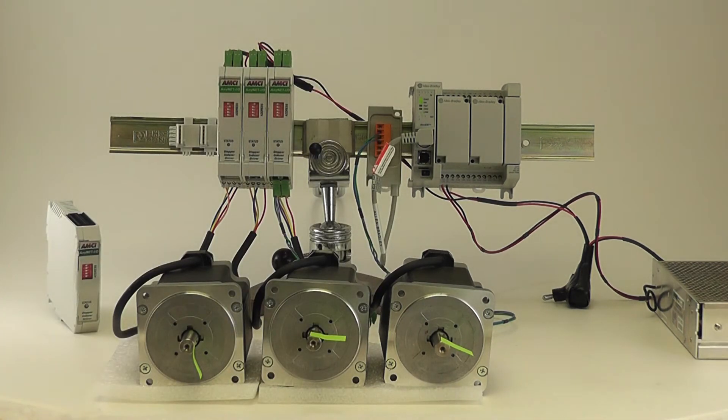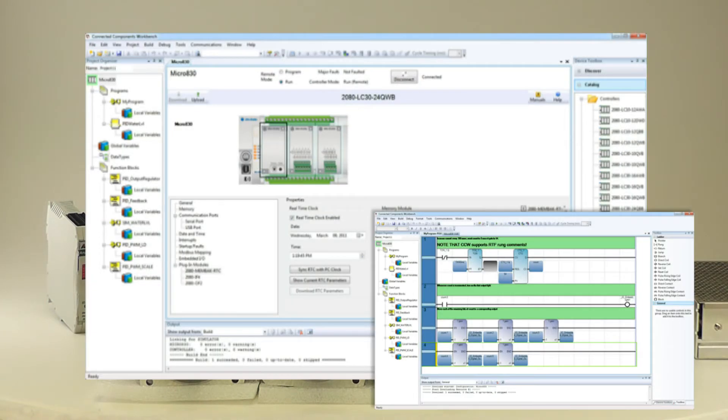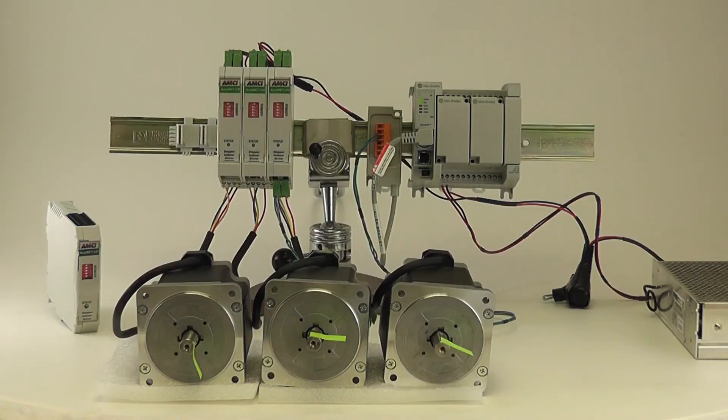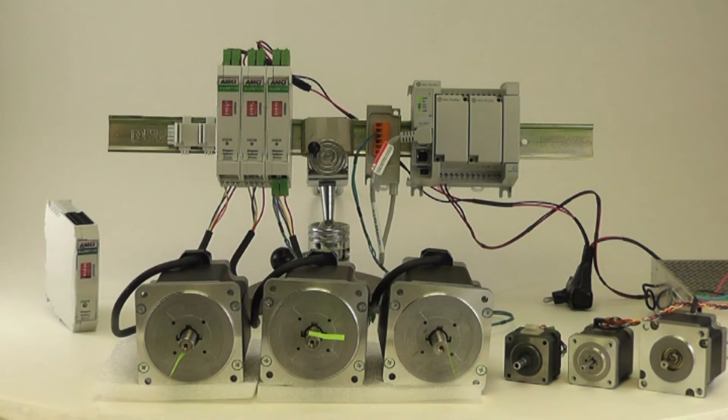This product, the ANG-1, like all of AMCI's other motion products that connect to a PLC or PAC, will also program through the new RS connected component software. So nothing separate, nothing new to learn, all very integrated. A nice seamless motion package for this new guy, the 830. It's very flexible.